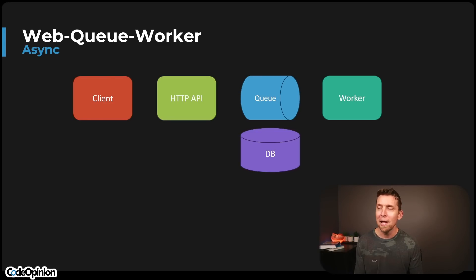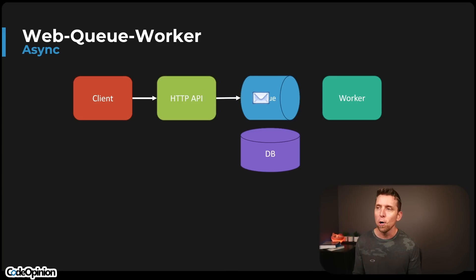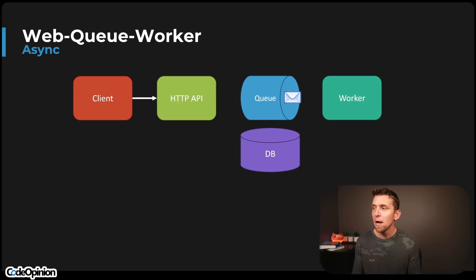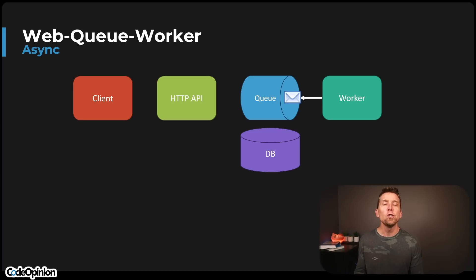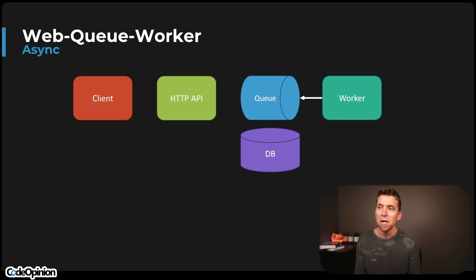Here's the Web Queue Worker pattern in its simplest form. We have our client make a request to our HTTP API — this is the web portion. From there, that request is going to need to perform some type of action, so what it's doing is creating a message to represent that and placing it on our queue. At that point, the request from our client to our HTTP API is done. The third step is having a worker consuming messages and pulling them off our queue to perform whatever work was requested — in my example, interacting with our database and making some type of state change.